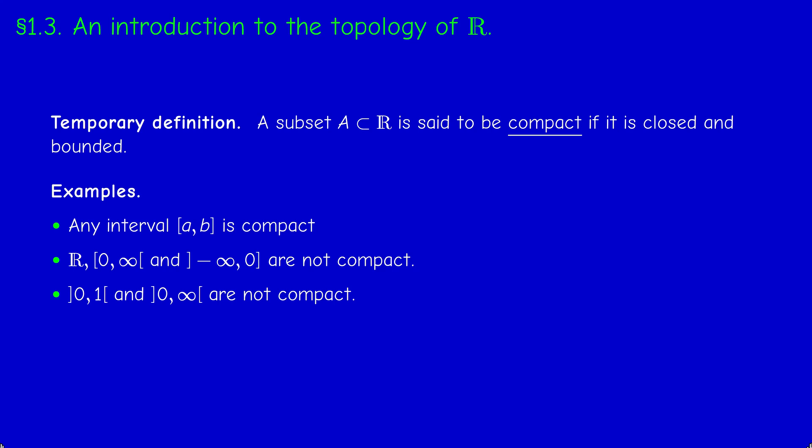The open interval (0,∞) is neither closed nor bounded, so it's not compact. Try to prove that if A is bounded, then A̅ is compact. A̅ is closed by definition, so you just need to prove that A̅ is bounded, and this is something I asked you to prove in the previous video.